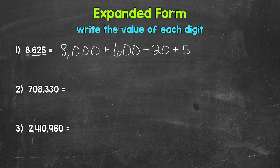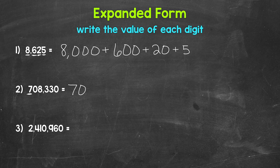We expanded that number out to show the value of each digit. Let's move on to number 2, where we have 708,330. So we start with the digit furthest to the left. That's this 7 right here. Well, it's in the hundred thousands place, so the value of this 7 is 700,000. The next digit is a 0 in the ten thousands place. This 0 tells us that the number doesn't have any ten thousands.